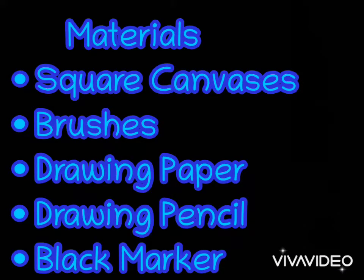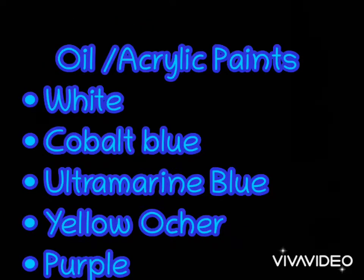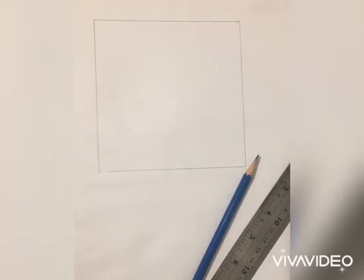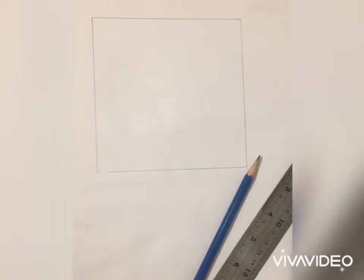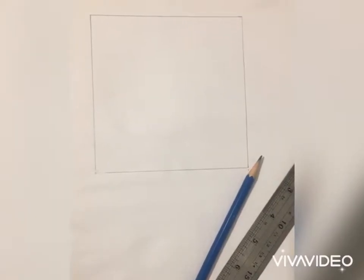Required materials are square canvases, brushes, drawing paper, drawing pencil, black marker, and oil or acrylic paints in white, cobalt blue, ultramarine blue, yellow ochre and purple — which is actually the color palette of Kashi Kari.